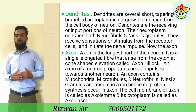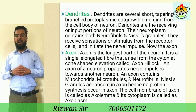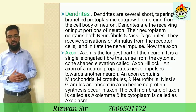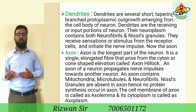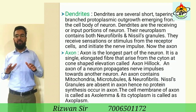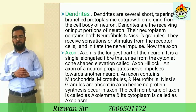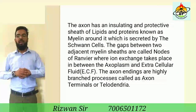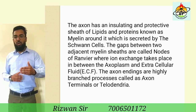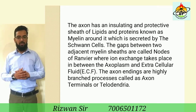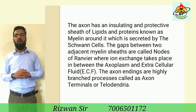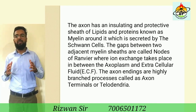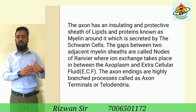The axon is the longest part of the neuron. It is a single elongated fiber that arises from the cyton at a cone-shaped elevation called the axon hillock. An axon propagates nerve impulses towards another neuron. An axon contains mitochondria, microtubules, and neurofibrils. Nissl granules are absent in the axon; hence, no protein synthesis occurs there. The cell membrane of the axon is called the axolemma and its cytoplasm is called the axoplasm. The axon has an insulating and protective sheath of lipids and proteins known as myelin around it, which is secreted by the Schwann cells. The gaps between two adjacent myelin sheaths are called nodes of Ranvier, where ion exchange takes place between the axoplasm and the extracellular fluid. The axon endings are highly branched processes called axon terminals or telodendria.